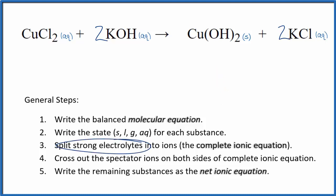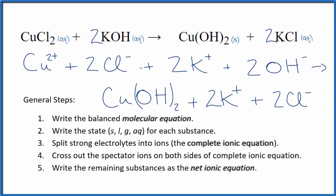Now we can split the strong electrolytes into their ions for the complete ionic equation. So we split all of the aqueous compounds apart into their ions. But for the solid, the copper 2 hydroxide, we don't split that apart. In net ionic equations, we don't split apart solids.